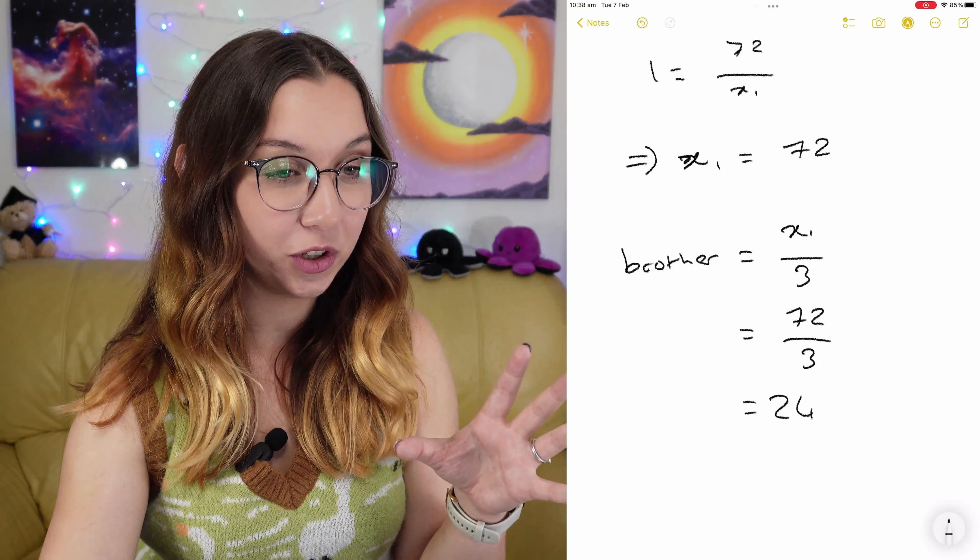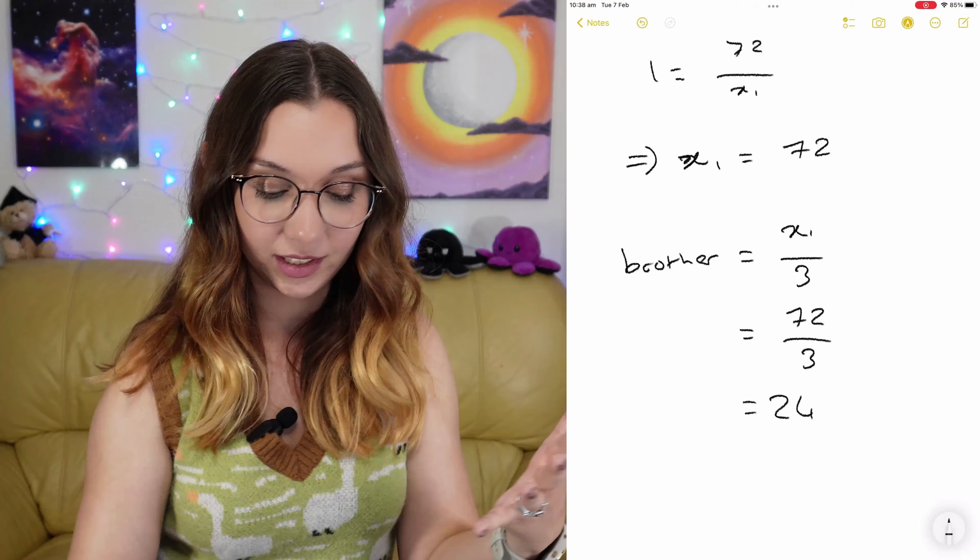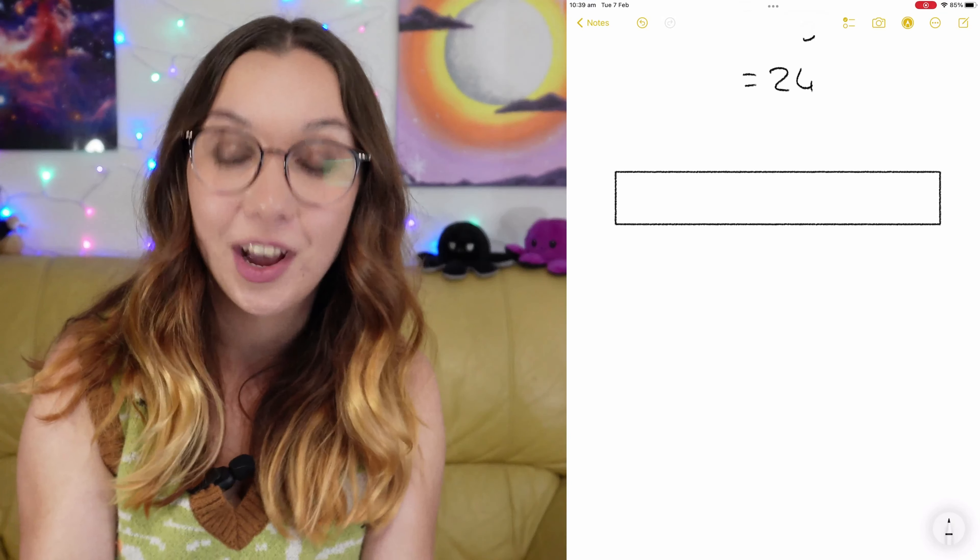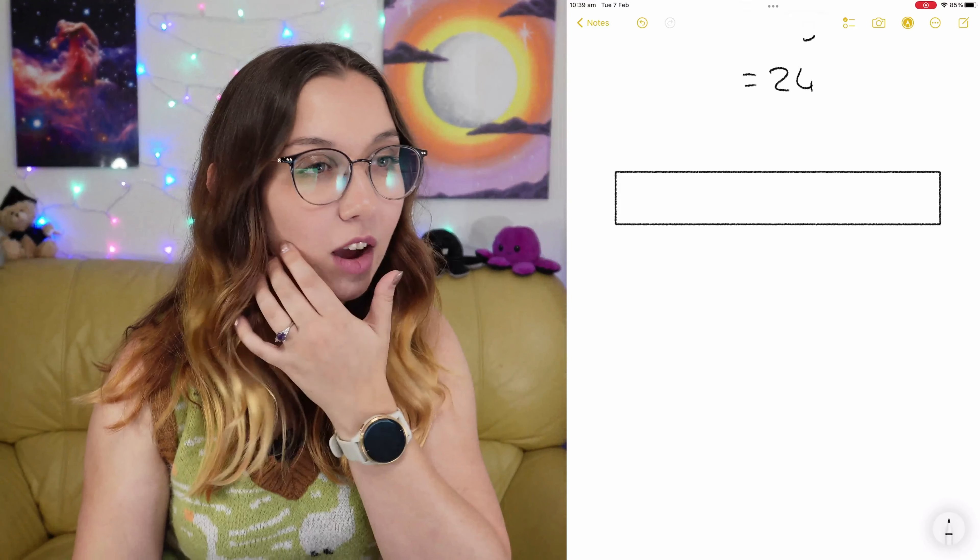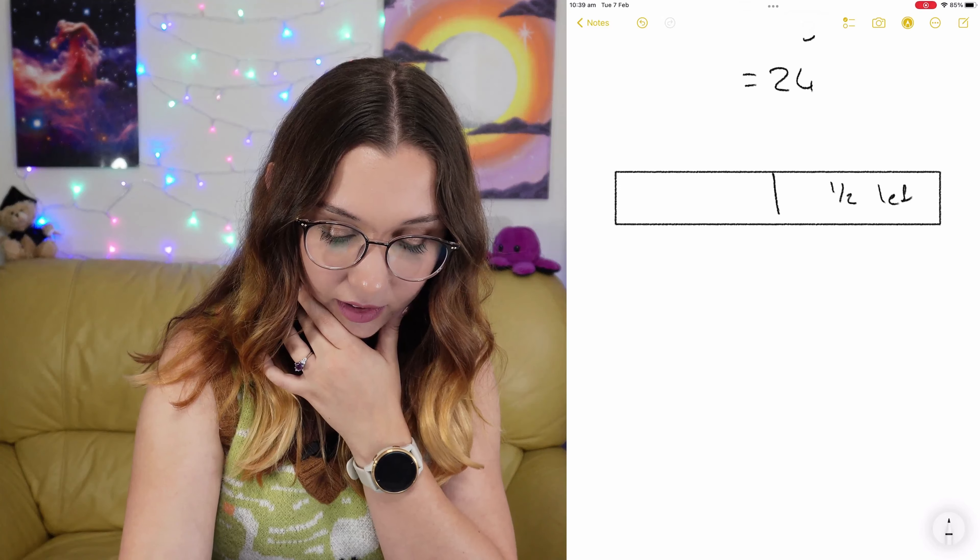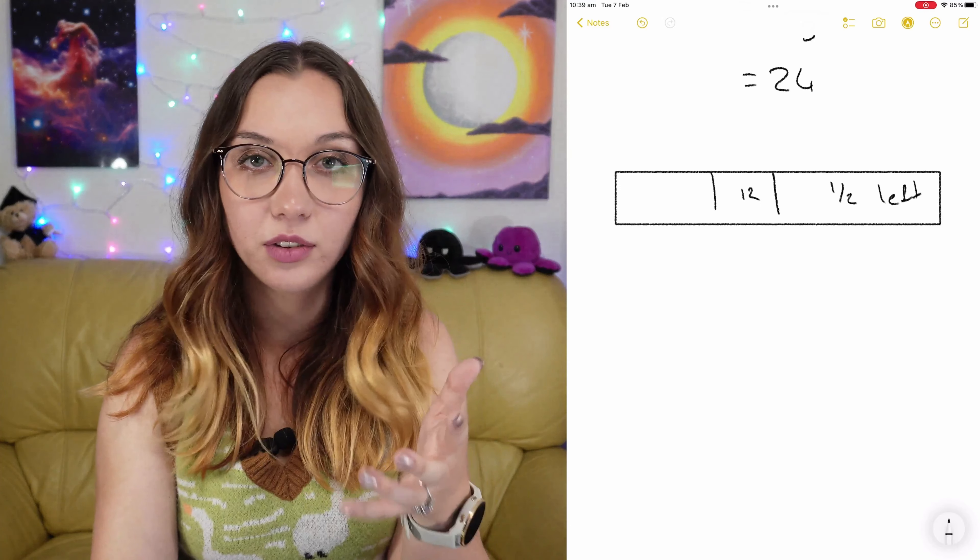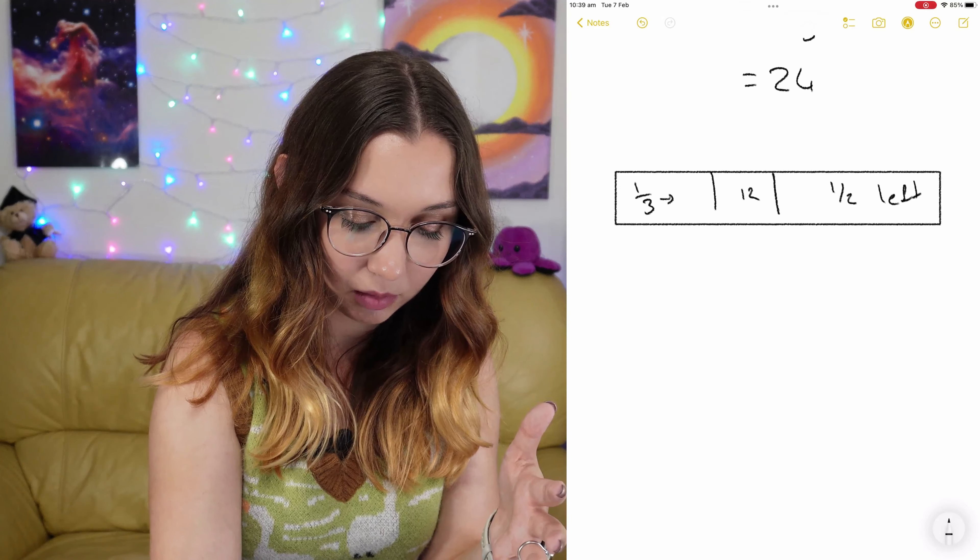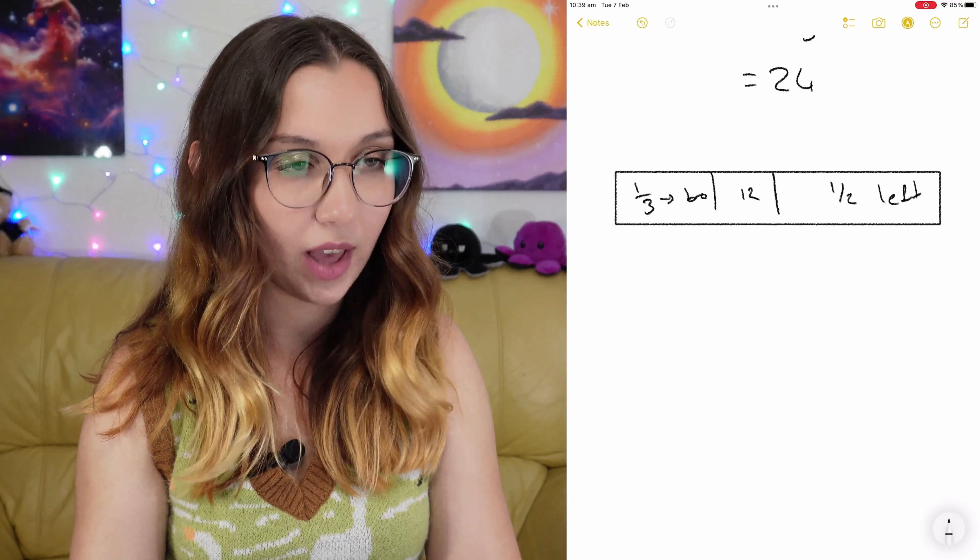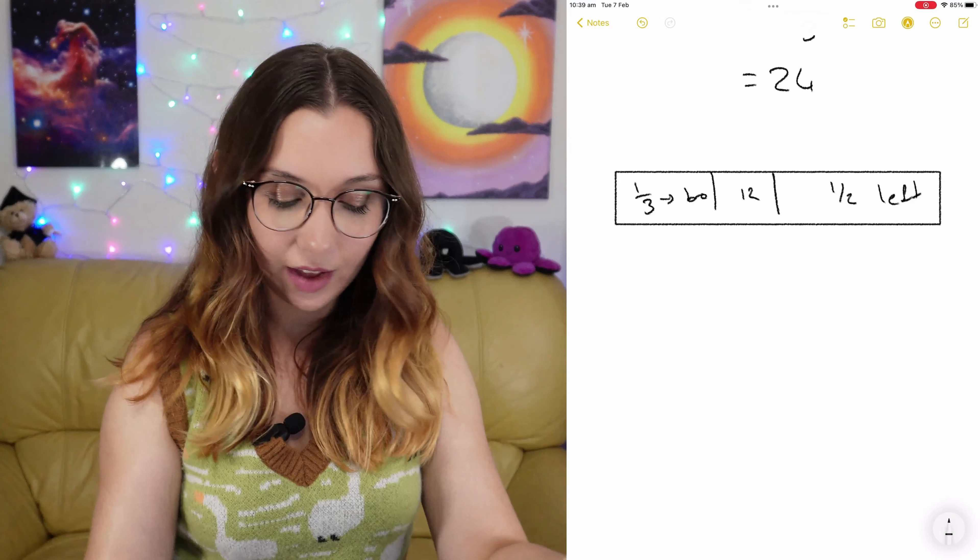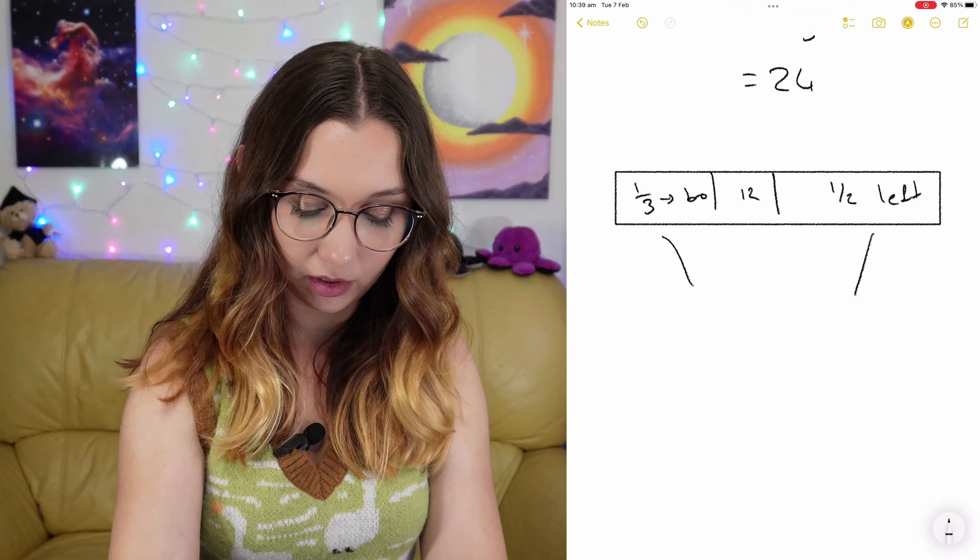However, what I see with the solution is that they draw it out because they're given like a graph. If they draw it out as a nice box, they split it in half and he has half left. 12 euros goes to the sister and then one third goes to bro.